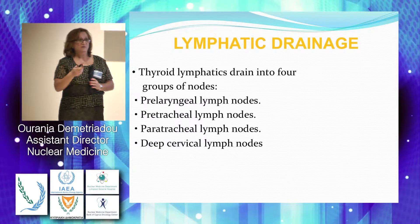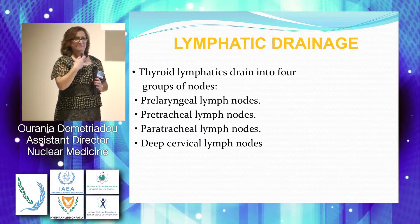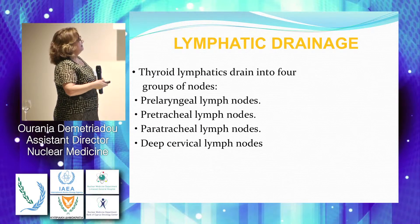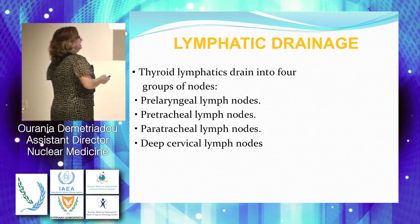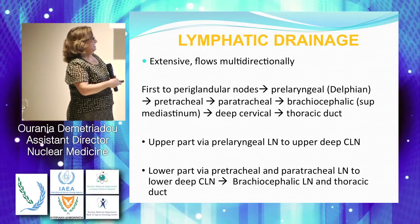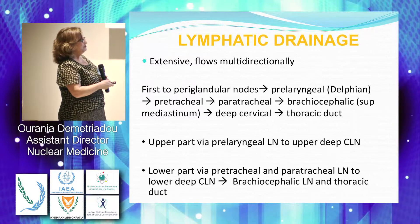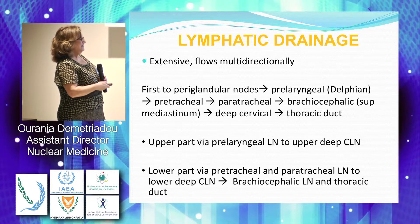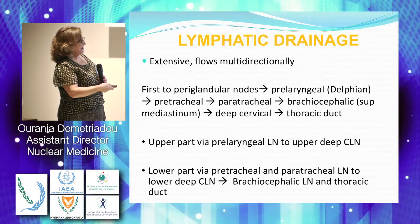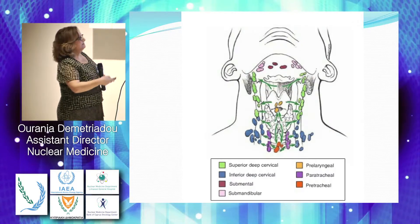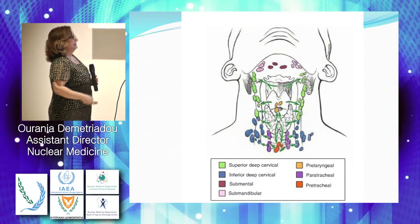Lymphatic drainage — we are going to have a special lecture with the mapping of the lymph nodes by our endocrinologist. Just know that we have four groups of lymph nodes, and that the upper part of the thyroid drains via the pre-laryngeal lymph nodes to the upper deep cervical lymph nodes, and the lower part via the pretracheal and paratracheal to the lower deep cervical lymph nodes and thereafter to the thoracic duct. Here is the mapping — you are going to have it in a special lecture.